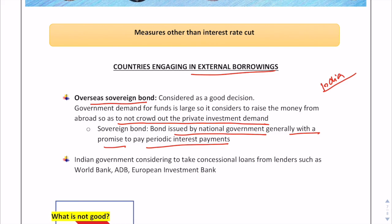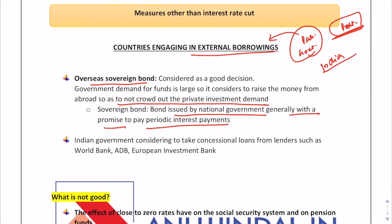There are two types of demand: public or government investment demand, and private investment demand. The government is taking the help of external borrowings so that private investment demand is not crowded out. Also in the news, the Indian government is considering concessional loans from lenders such as the World Bank, ADB, and the European Investment Bank for green energy, which is again a type of external borrowing India is relying upon.